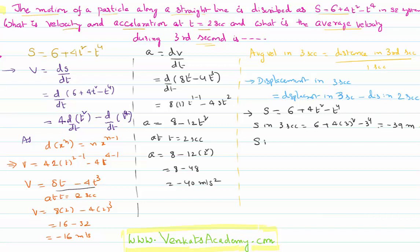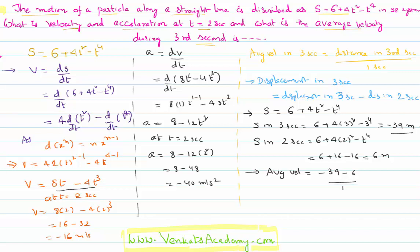Similarly, S at t = 2 seconds: S = 6 + 4×4 − 2⁴ = 6 + 16 − 16 = 6 meters. Therefore, average velocity = (−39 − 6) / 1 = −45 meters per second. That gives the average velocity during the third second.